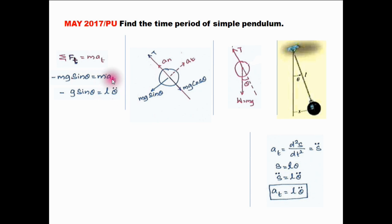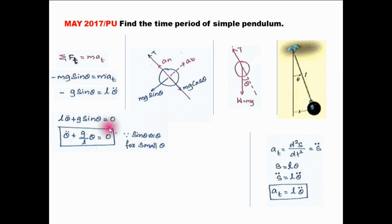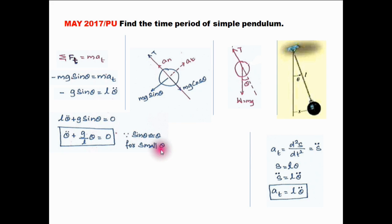Substituting this into the equation and reducing, we get the equation of motion. Here, sin theta can be replaced by theta when theta is small. So while doing this simple pendulum experiment, theta must be very small. If theta is large, this assumption is invalid. When theta is small, we write sin theta as theta.